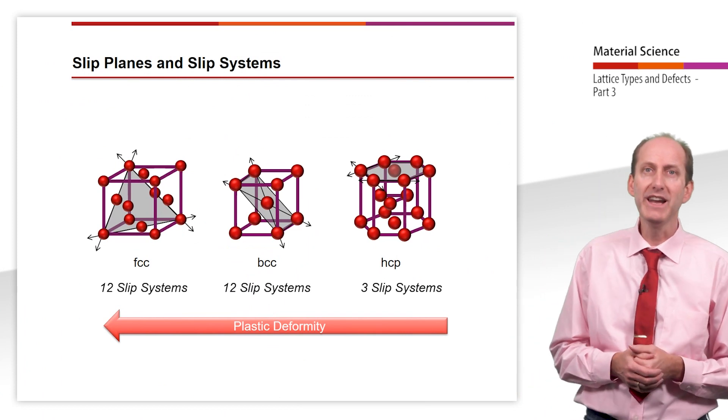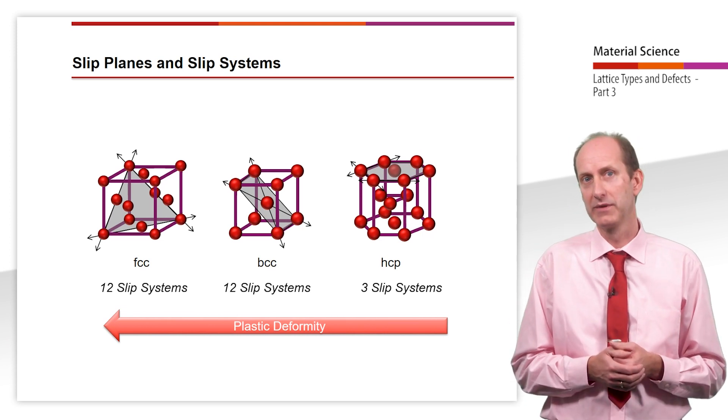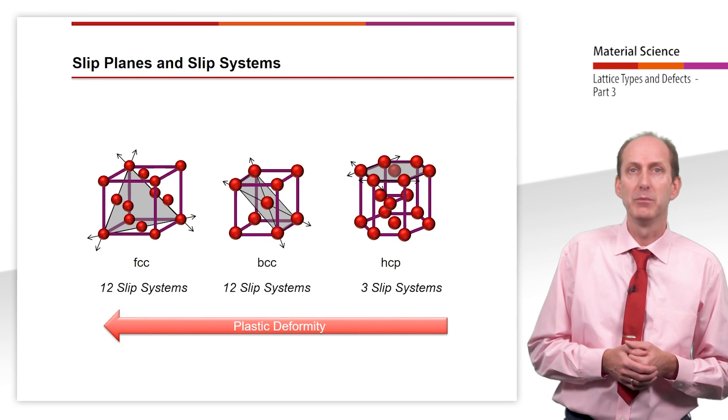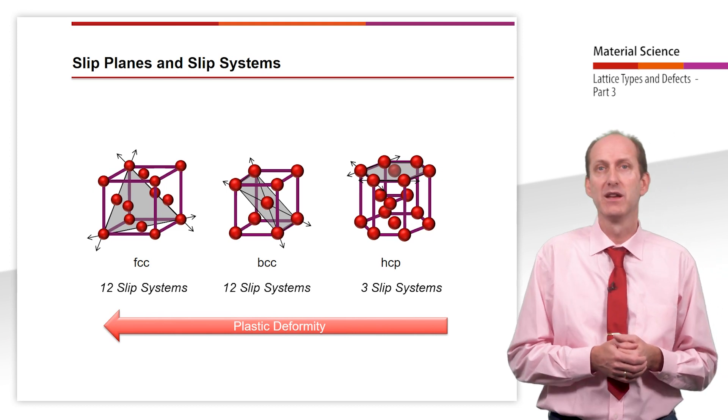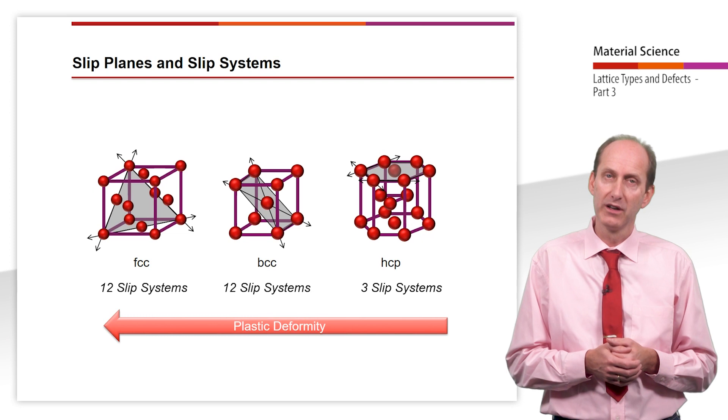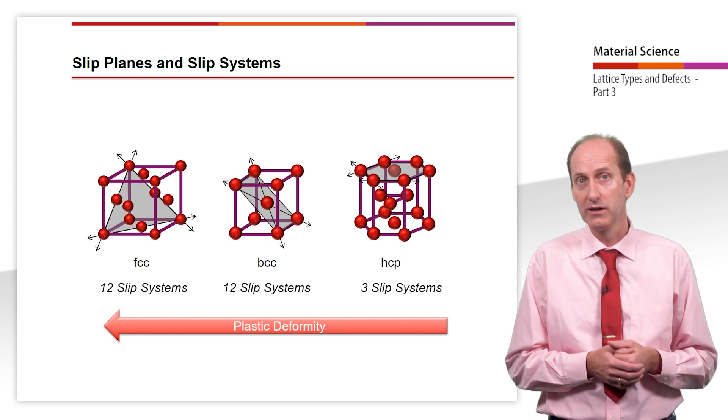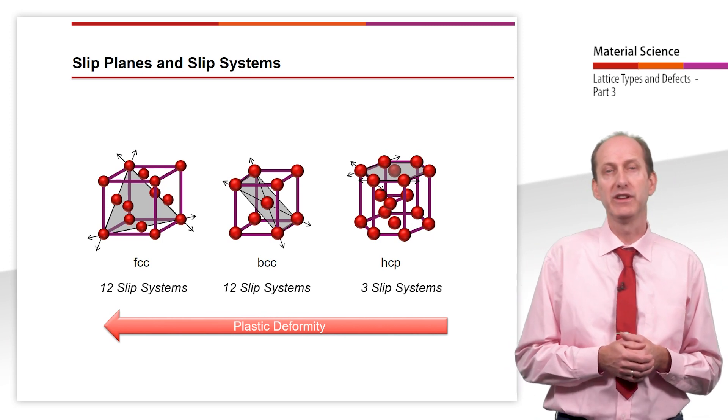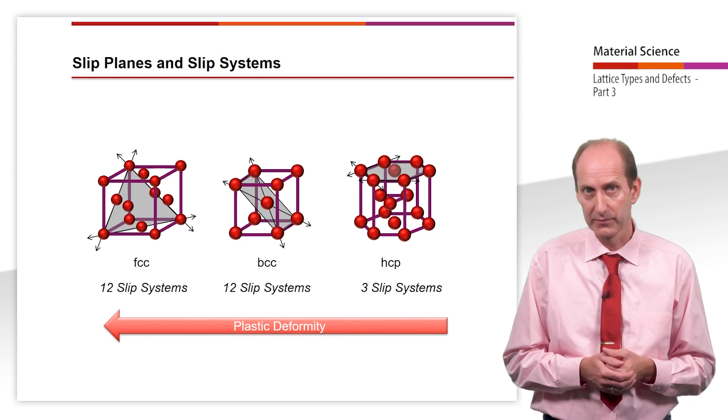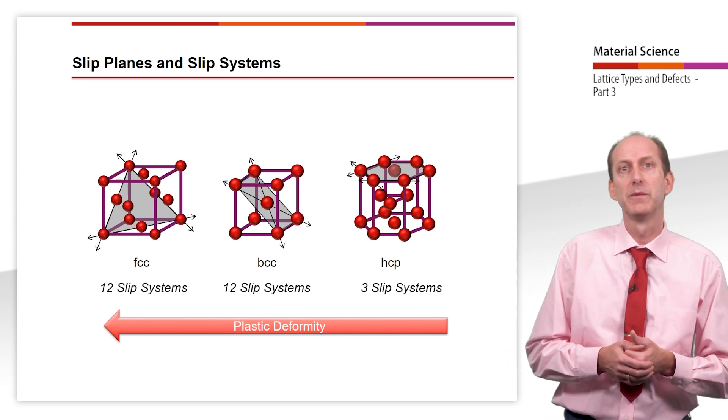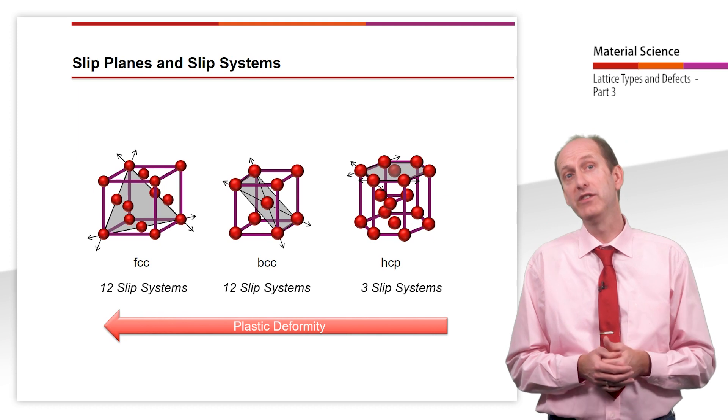Not only the slip plane as such is determined by the atomic density, but also the possible direction of slip. Slip directions are characterized by a dense arrangement of atoms. Slip planes that are combined with slip directions are referred to as slip systems. Slip systems are responsible for the plastic deformation behavior of the different lattice types. The essential factors for good plastic properties are the number of slip systems and the occupancy density of the slip systems. There are significant differences in this respect between the three main lattice structures of metals FCC, BCC and HCP.